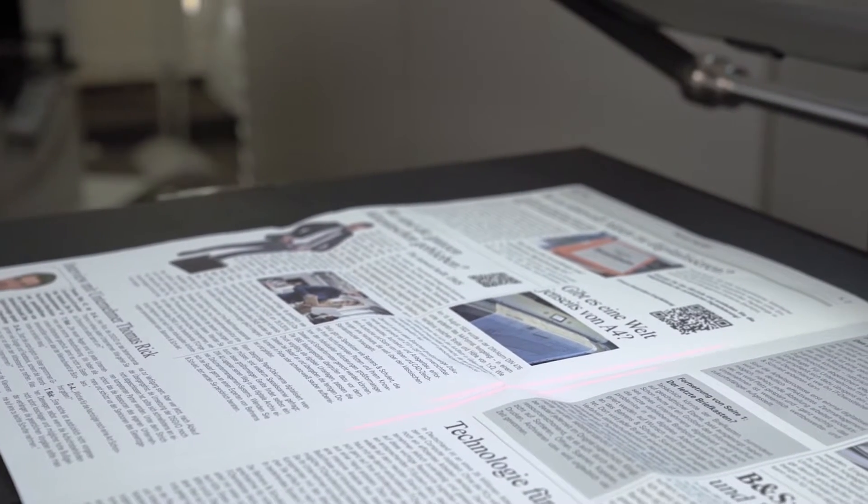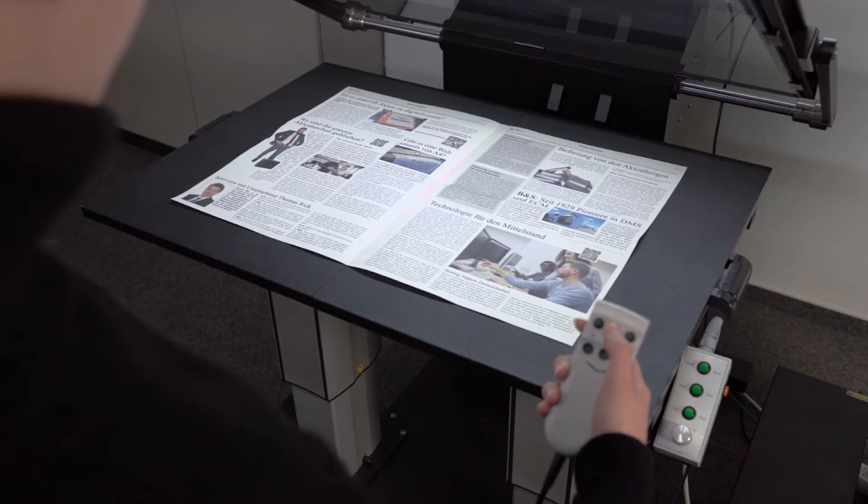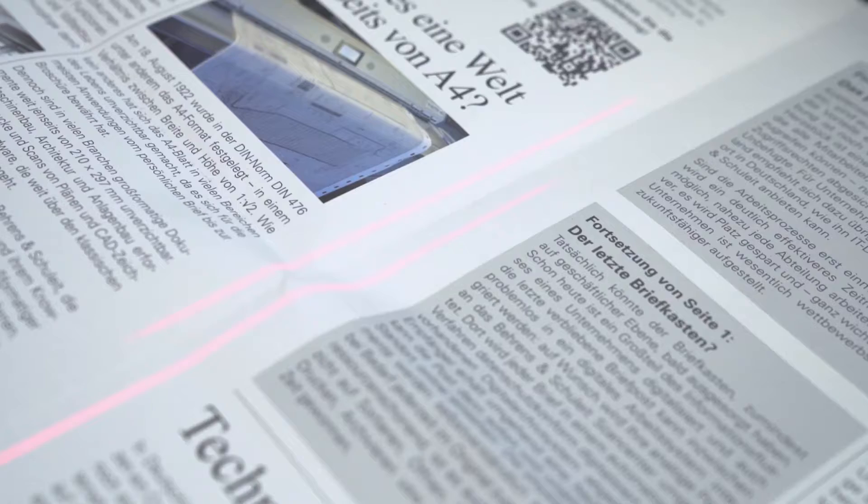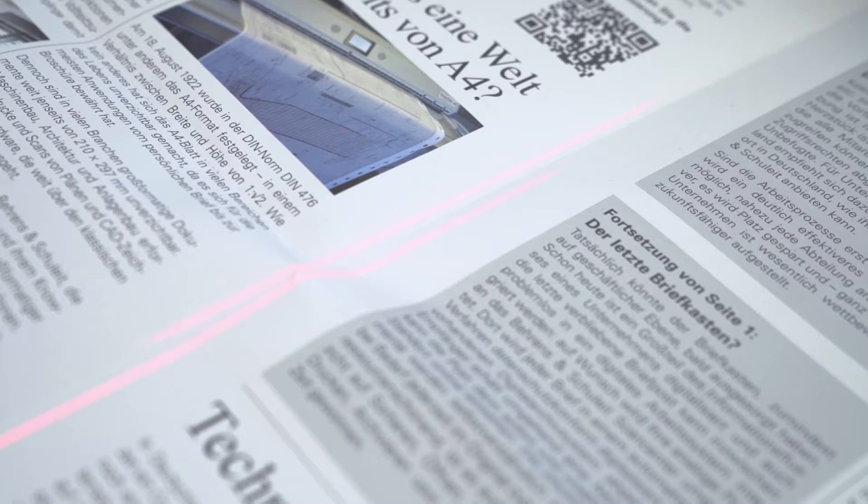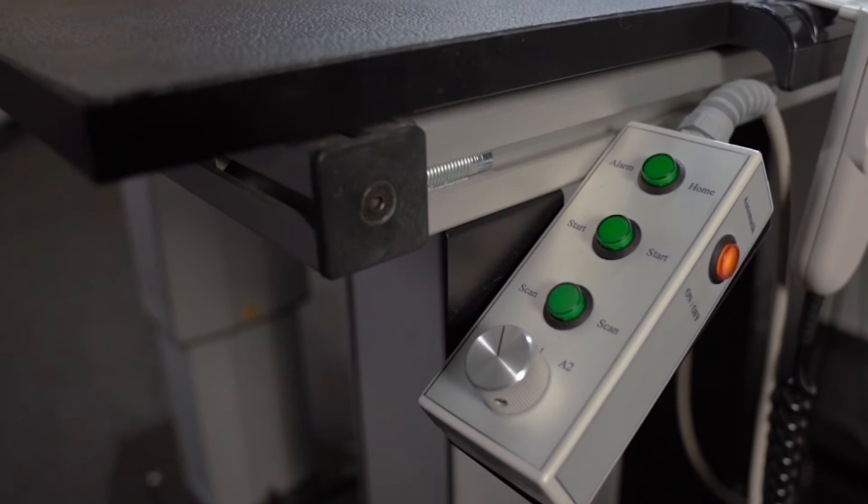To ensure highest user comfort and productivity, there are three scanning modes for the large format scanners. In the first mode, using the glass plate is optional. The template is aligned with the red laser and scanned via the software or remote control.